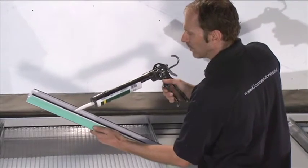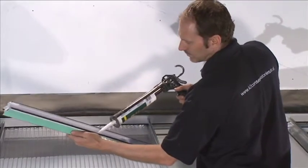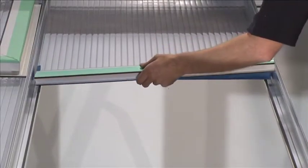Run a bead of silicone along the underneath of the muntin bar. Slide onto the bottom of the glazing sheet.